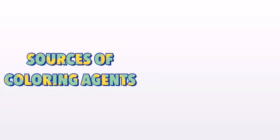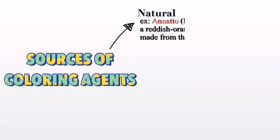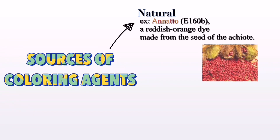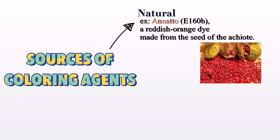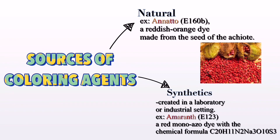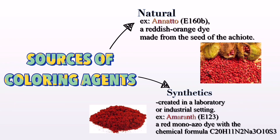There are two sources of coloring agents. The first one is natural — natural coloring agents are taken from plants or fruits. The second one is synthetic — synthetic coloring agents are created in a laboratory or industrial setting.